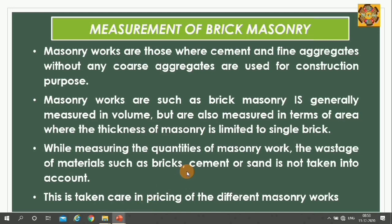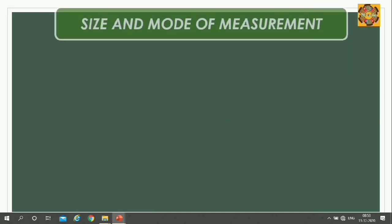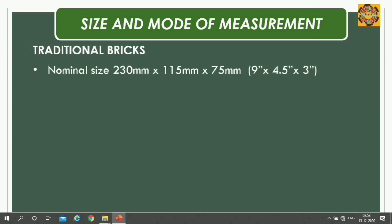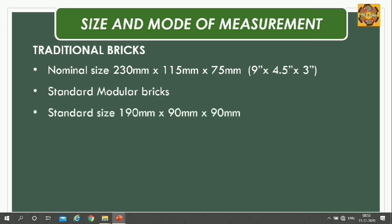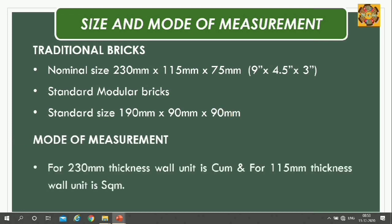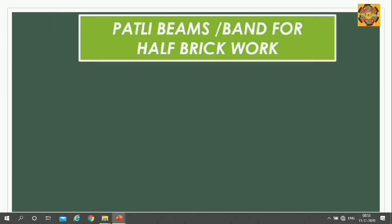The traditional nominal brick size is 230 mm × 150 mm × 70 mm (9 inches × 4.5 inches × 3 inches). Standard modular bricks are 190 mm × 90 mm. A 230 mm thickness wall is measured in cubic meters, while a 115 mm thickness wall is measured in square meters.